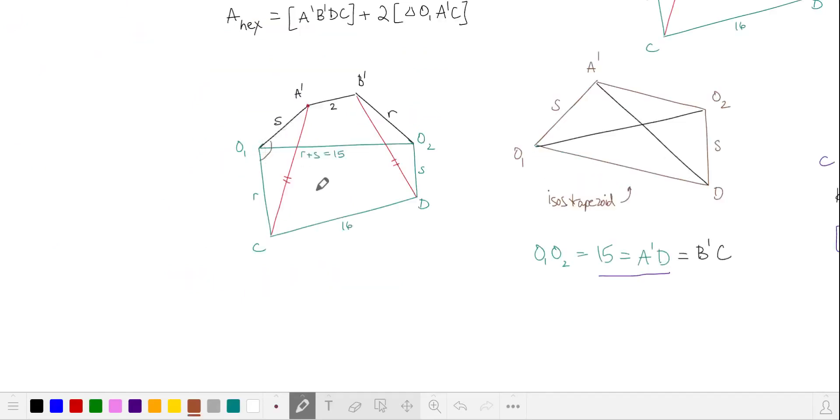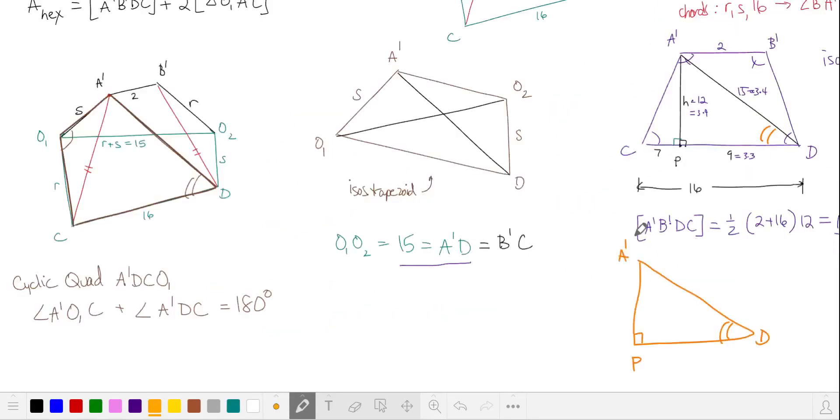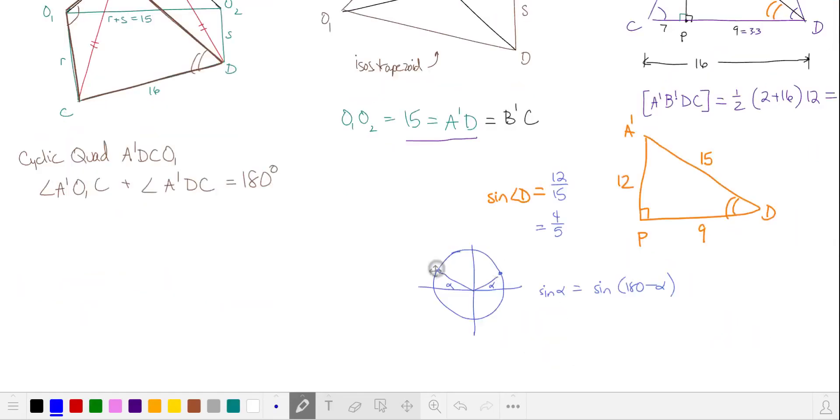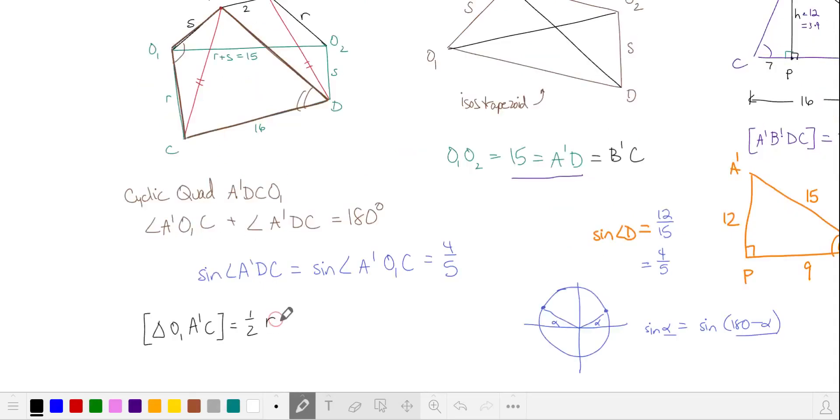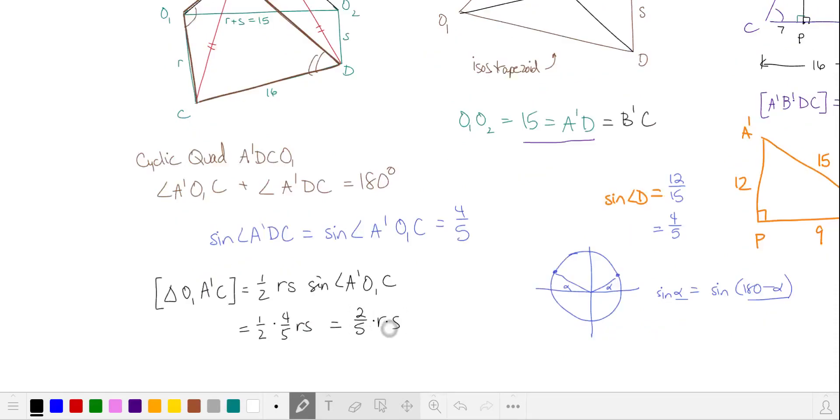I'd like to find this angle at O1, so let's take a look at cyclic quadrilateral A prime, D, C, O1. Because they are opposite angles, angle A prime, O1, C and angle A prime, D, C add up to 180 degrees. Remember this angle at D was part of this right triangle A prime, P, D. That was a 3, 4, 5 triangle. The sine of this angle is opposite over hypotenuse or 4 fifths. Remember that the sine of an angle is equal to the sine of its supplement. That means the sine of our angle at D is the same as our sine of A prime, O1, C that we're interested in. We can use that now to find the area of this small triangle, O1, A prime, C. The two side lengths are R and S. Substituting, we get 2 fifths times R times S.